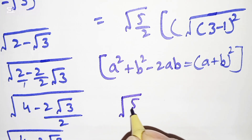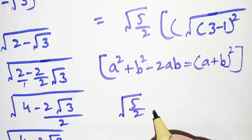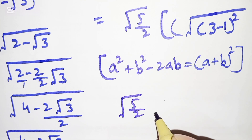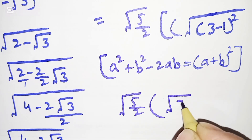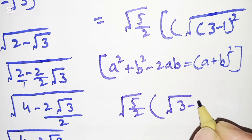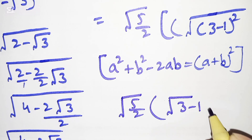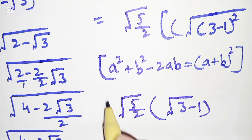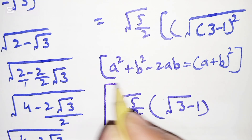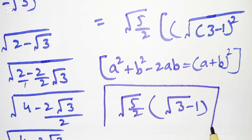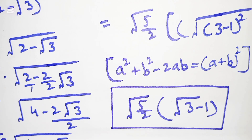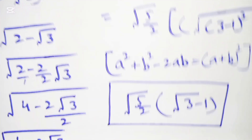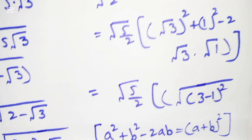So √5 over 2 times (√3 minus 1). And here it is our final answer. Thank you so much for watching my video, and don't forget to subscribe to my channel.